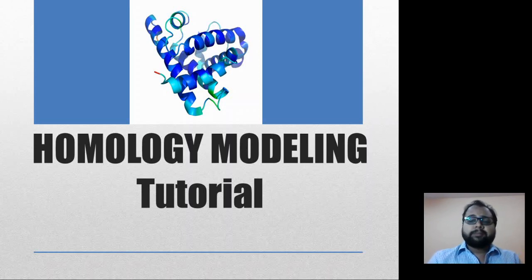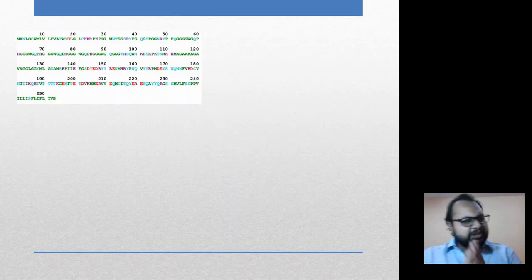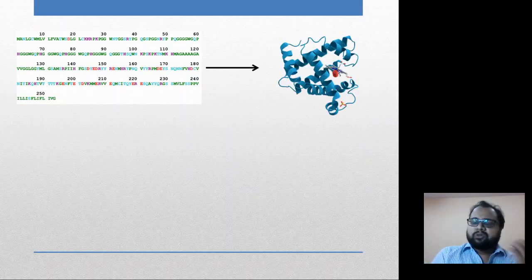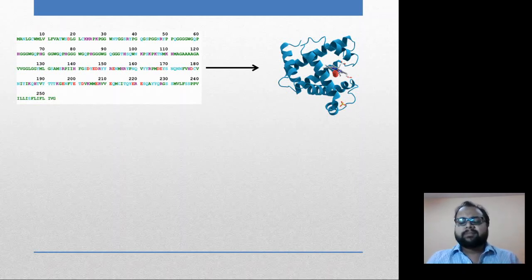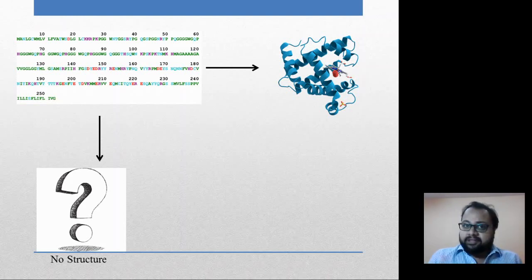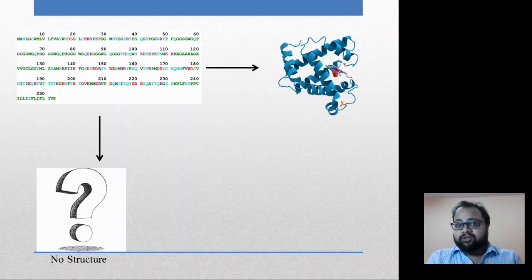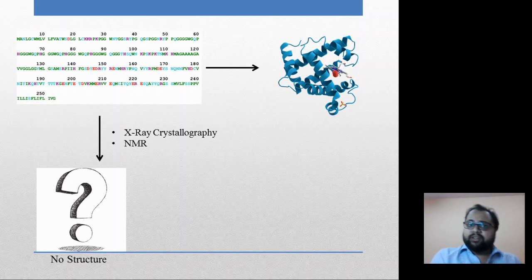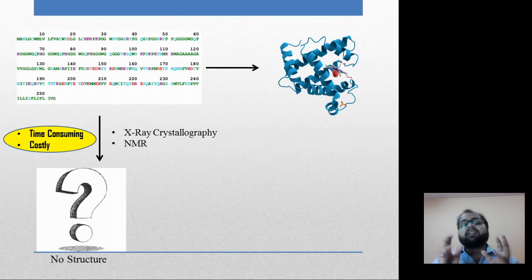Imagine you have an amino acid sequence — that means you know the protein, because every protein structure has an amino acid sequence. But what if you do not know the structure of the protein? If only the sequence is available but no structure, how do you actually determine the structure? We can use experimental methods such as X-ray crystallography or NMR, but the issue with these experimental methods is that they are very time-consuming and very costly.